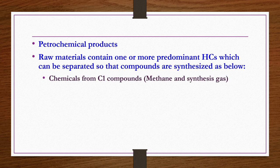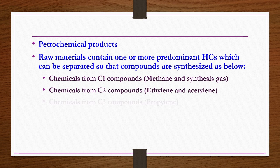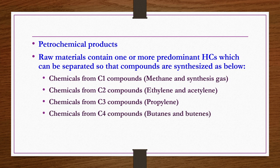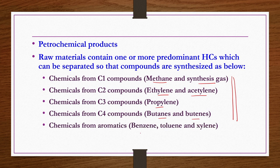Petrochemical raw materials contain one or more predominant hydrocarbons that can be separated and compounds synthesized based on carbon number: chemicals from C1 compounds like methane and synthesis gas; C2 compounds like ethylene and acetylene; C3 compounds like propylene; and C4 compounds like butenes. Also chemicals from aromatics like benzene, toluene, and xylene, as well as some pesticides.